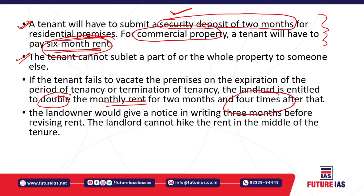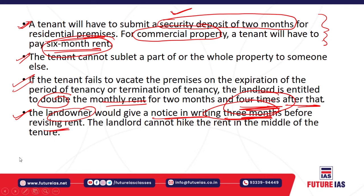From the third month after the expiration of the tenancy, the tenant has to pay four times the rent to the landlord if they do not vacate the premises. Regarding landlord obligations, the landlord must give at least three months' written notice before revising the rent. In the middle of the tenancy period, the landlord cannot hike the rent for the premises.